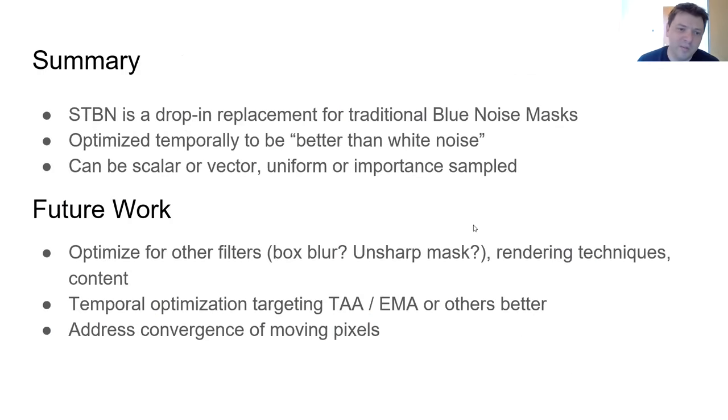So in summary, spatial temporal blue noise is a drop-in replacement for traditional blue noise masks. If you are using independent blue noise masks as a flipbook, you just use our masks as a flipbook instead. It won't ever do any worse and it can in fact do quite a bit better. Spatiotemporal blue noise is blue noise which has been optimized to be better than white noise for convergence temporally. It can be either scalar valued or vector valued and it can be uniform or importance sampled.